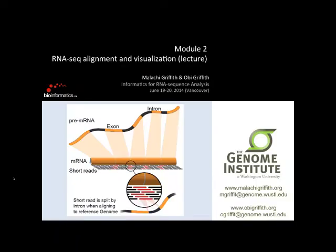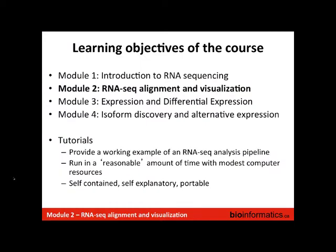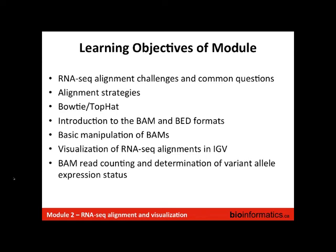This is under the same Creative Commons share-alike license. We're going to look at alignment and visualization. The learning objectives of this module are to talk about alignment challenges and common questions, go over some alignment strategies, briefly review Bowtie and TopHat, introduce the BAM and BED formats, do basic manipulation of BAMs in the tutorials, visualize some RNA-seq alignments in IGV, count some reads in a BAM file, and look at variant alleles to see if they're expressed in our RNA data.